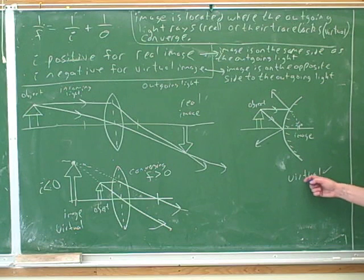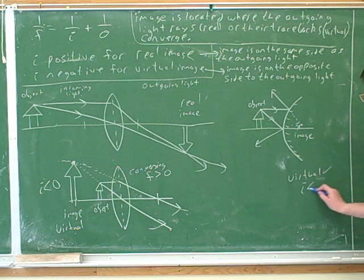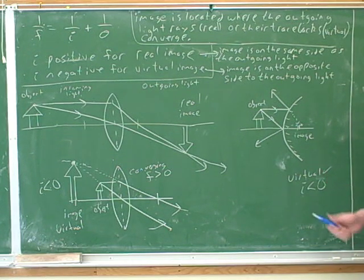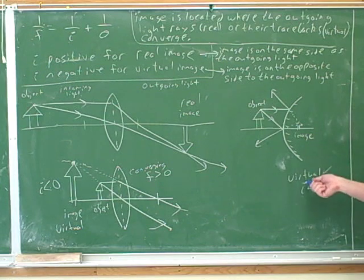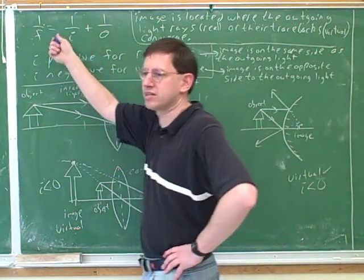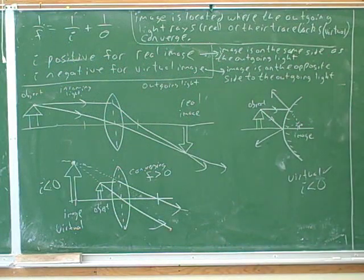Does knowing it's virtual tell us about the F or the I? The I. Positive or negative? Negative. It doesn't tell us that F is negative — it tells us the I is negative. So this is another example of using these sign conventions, and this is crucial because we can't use the equation until we know whether to plug in positive or negative numbers. That's our biggest challenge.